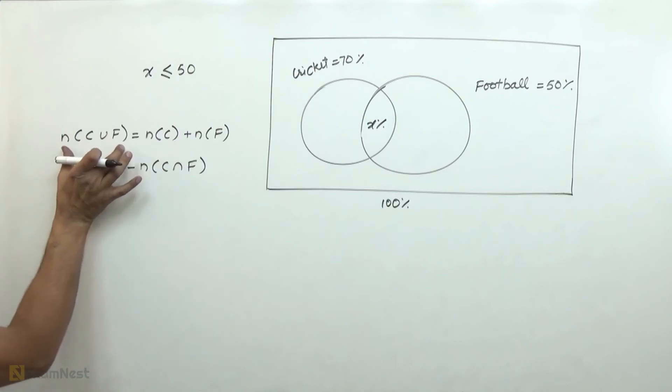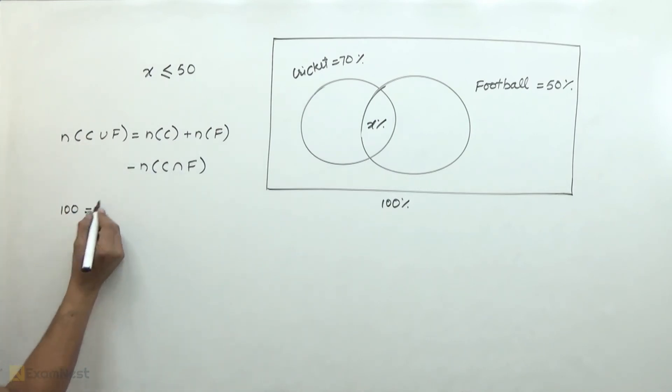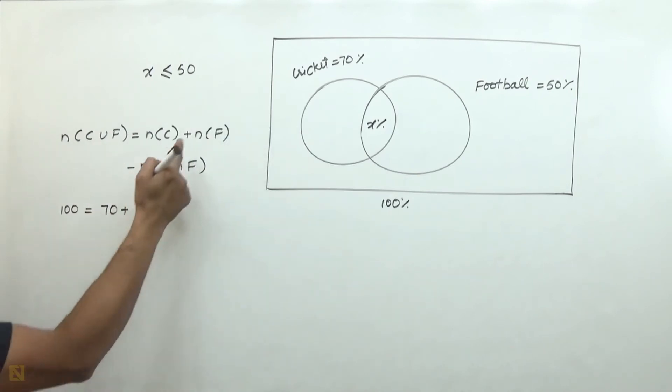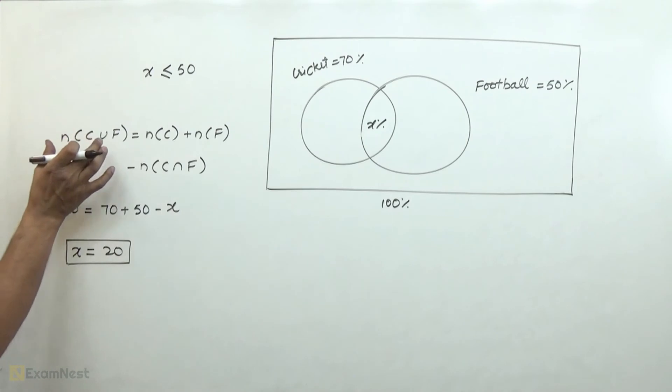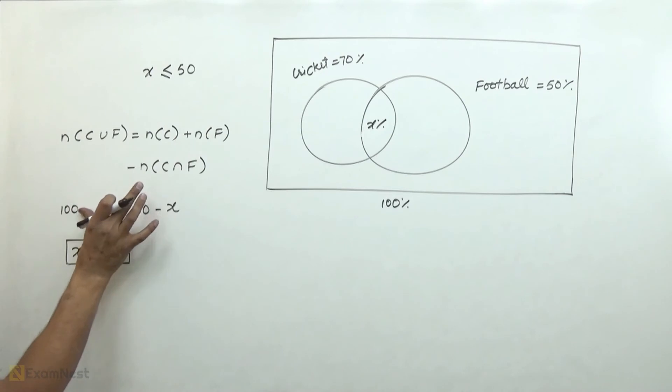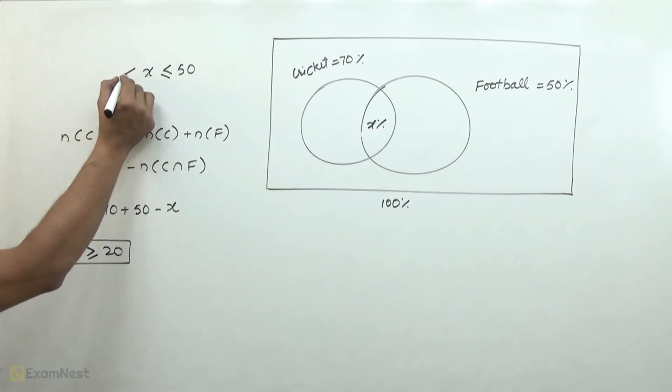This value cannot be more than 100%. That means here is the upper value. We write 100%. Cricket is 70, football is 50, minus those who like both which is X. The value of X should be greater than or equal to 20. So here we have the lowest and highest value.